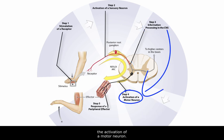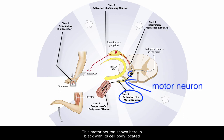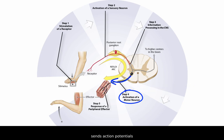the activation of a motor neuron. This motor neuron, shown here in black with its cell body located in the anterior horn of the spinal cord, sends action potentials to the periphery via the anterior root of the spinal nerve.